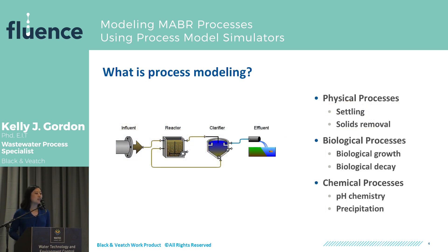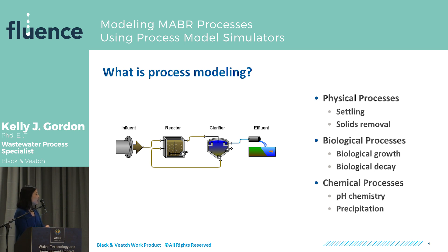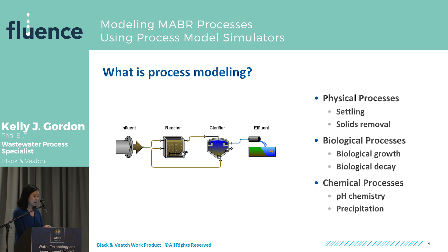In a wastewater treatment process model, you can really group the processes into three categories. Physical processes, which include settling and solids removal. Biological processes, which include biological growth and decay of different microorganisms. And chemical processes, which include pH chemistry and precipitation. Each of these subunits has some combination of physical, biological, and chemical processes that we're modeling.